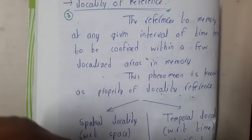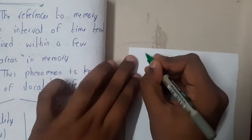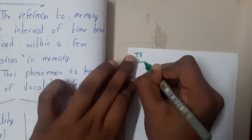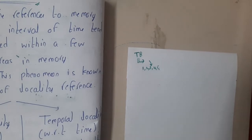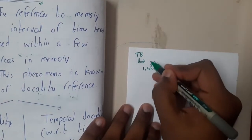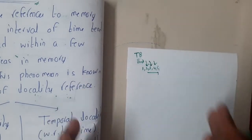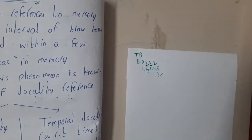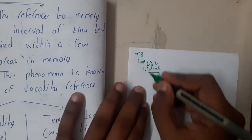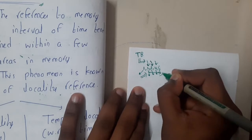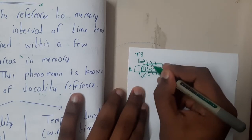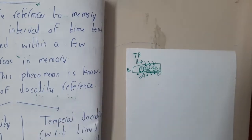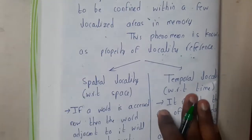Assume you are reading a textbook. You are reading page three — the most likely next thing is you will read page four, or if you have a doubt, you'll check page two or three. You move nearby. With respect to memory locations — word one, word two, word three, word four, word five — these words are in a block. If you read word one, there is a high chance you'll read word two, three, or four next. That is locality of reference, and it has two types: spatial locality and temporal locality.